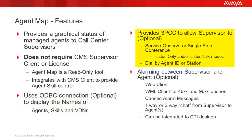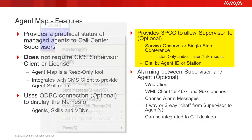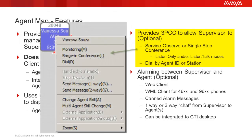When licensed and configured with third-party call control, the AgentMap client allows its user to barge in, dial, or monitor the agent by station ID or agent ID.